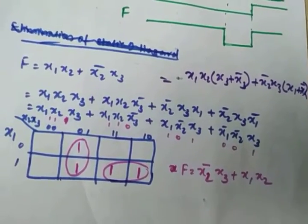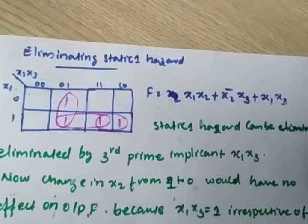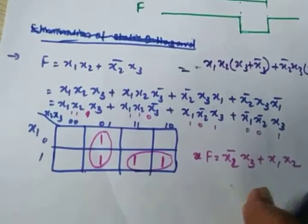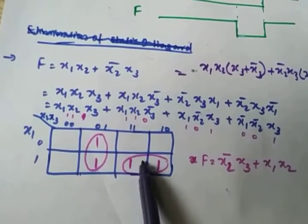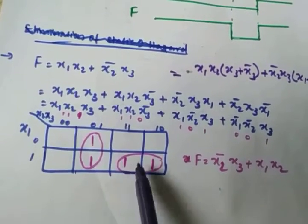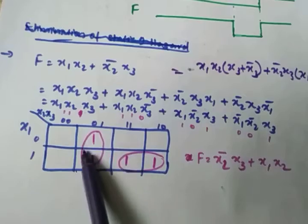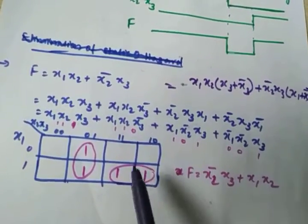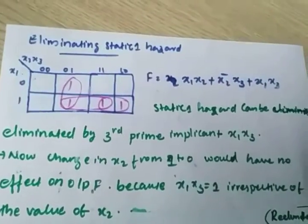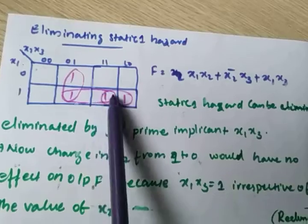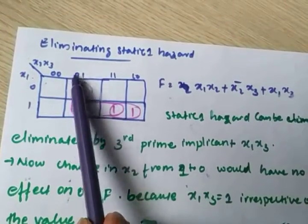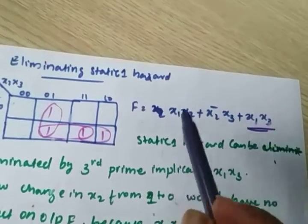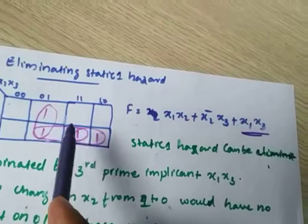Now our aim is to find how to eliminate the static hazard. Looking at the K-map, we have 1-1-1-1. We group them, but here we also need to map a redundant group. This redundant group is normally not considered, but to eliminate static hazard you have to include the redundant group. Mapping the redundant group gives x1x3. So another term enters the circuit: x1x3.